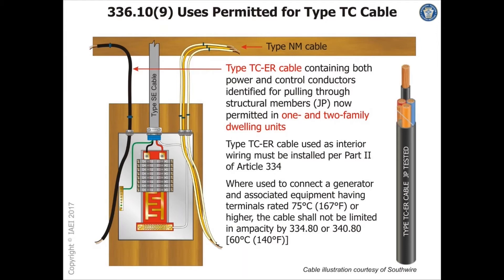Type TC-ER cable containing both power and control conductors that is identified for pulling through structural members is permitted to be installed in one- and two-family dwellings. There are suffixes for the cable that explain those permissions.